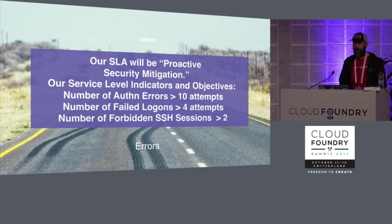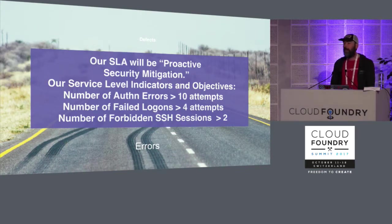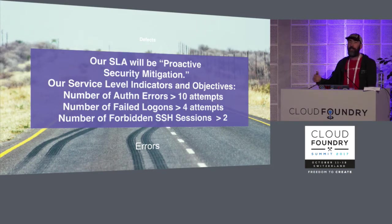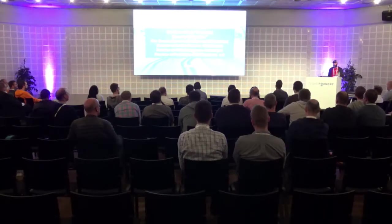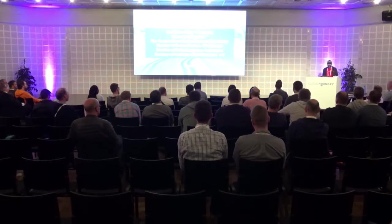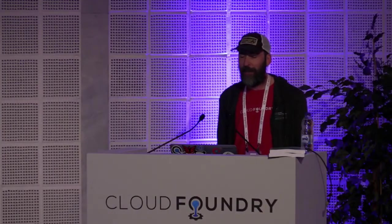The next golden signal is errors in our system. In this case, we're talking about errors specifically to help us avoid security issues. Has anyone had security issues with their platform? I did once — it cost me a $300,000 Amazon bill. So let's monitor the security stuff: number of authorization errors, failed logins, failed SSH attempts. On the right we've got our objectives — 10 attempts could be per minute, per second, or per hour; that's something you need to work out for yourselves.